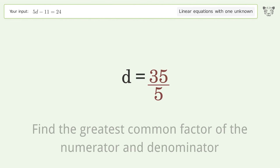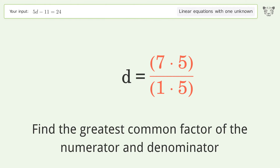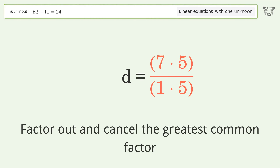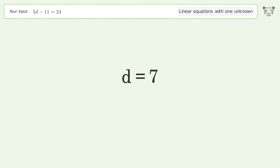Find the greatest common factor of the numerator and denominator. Factor out and cancel the greatest common factor. And so the final result is d equals 7.